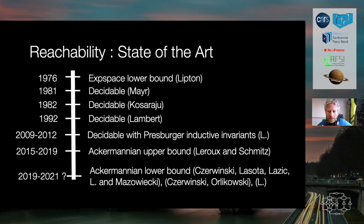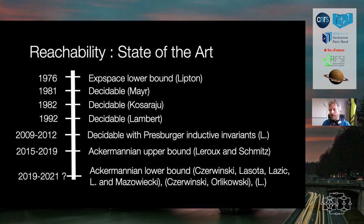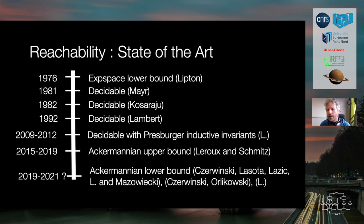This means the problem is recursively enumerable and its dual is also recursively enumerable, so the problem is decidable. The reachability problem can be decided by two semi-algorithms executed in parallel: one that fairly enumerates path executions, and one that fairly enumerates Presburger formulas. Since we can decide if a formula is an inductive invariant, we can decide the reachability problem. In 2009 this was based on the KLM algorithm; in 2012 a direct non-constructive but short proof was given.